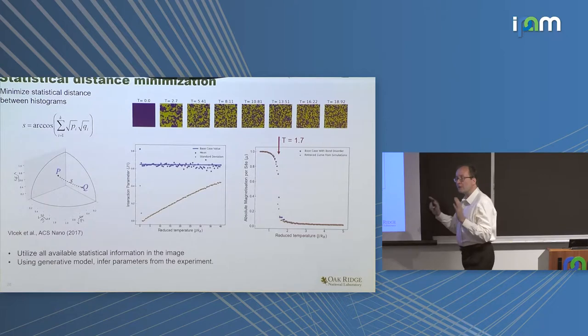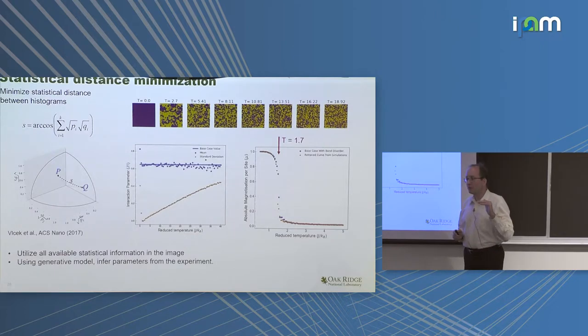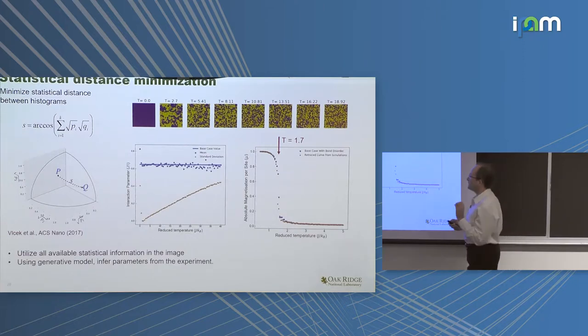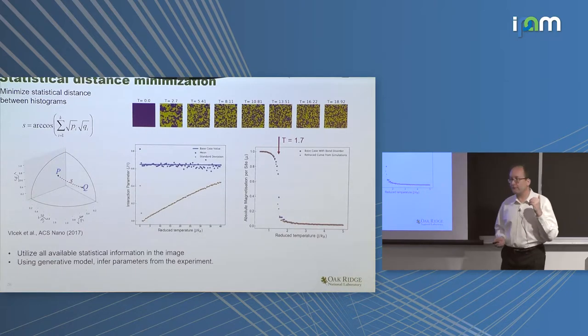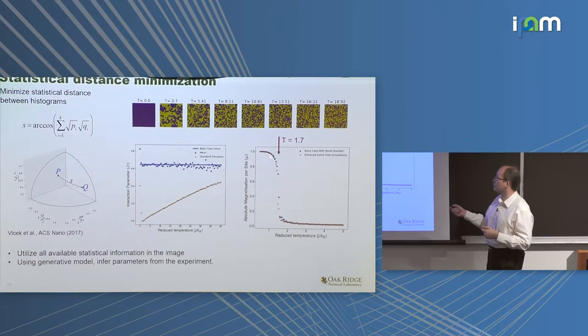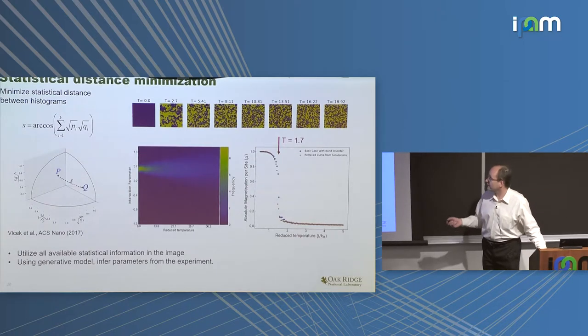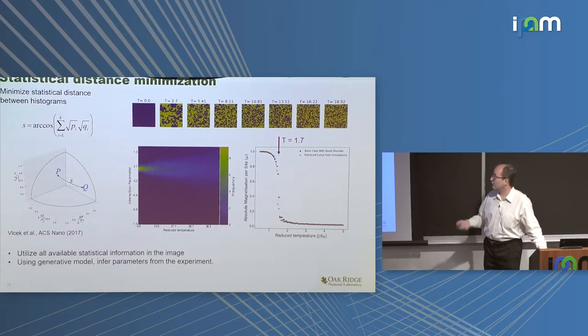The answer is it's possible using the statistical distance minimization method. This is the example of how it works. Why is it important? The reconstruction of the interaction parameter is possible at temperatures well above transition temperature. It matters because there are a lot of very high resolution room temperature microscopes in the world. There are very few liquid nitrogen microscopes. And there are none to my knowledge of high resolution liquid helium electron microscopes. If I can learn the physics at temperature which is 10 times higher than phase transition, that's amazing.